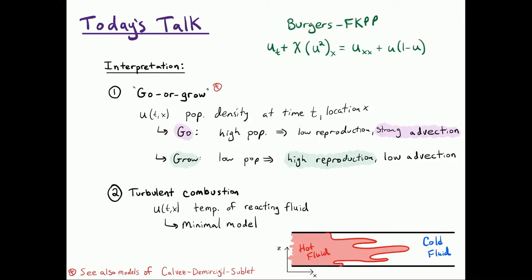So the model that I'm going to talk about today is this Burgers FKPP, so it's very simple. We got it from, you can see it in Murray's book, but there's papers going back to the 70s that I'll mention in a second. For us it's a mathematical model, but if you want to give it some sort of interpretation, two options are one is kind of population dynamics model with this sort of go or grow hypothesis.